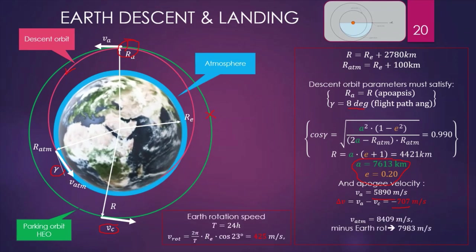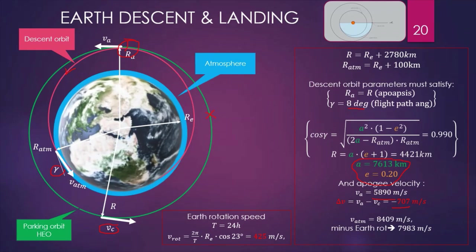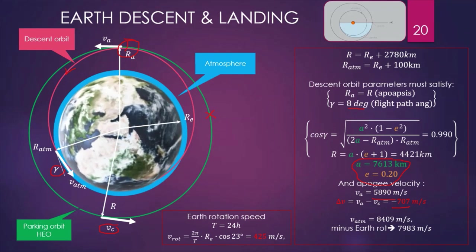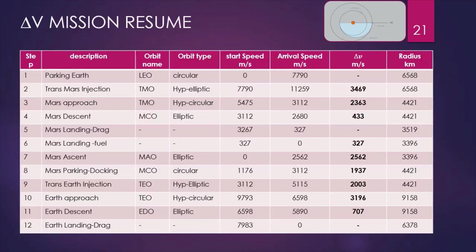When we are entering the Earth atmosphere, we have this velocity — minus Earth's rotation — giving us nearly 8,000 m/s. Finally, this velocity is completely dissipated by the atmosphere up to the final splashdown, when we open the parachute. Finally, we are back home.